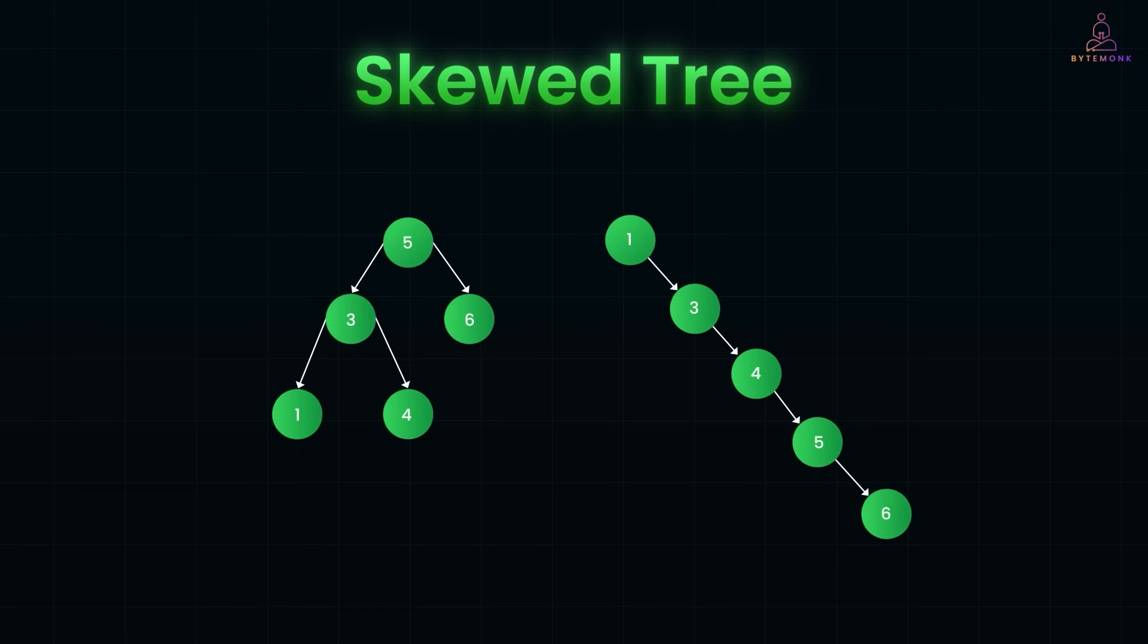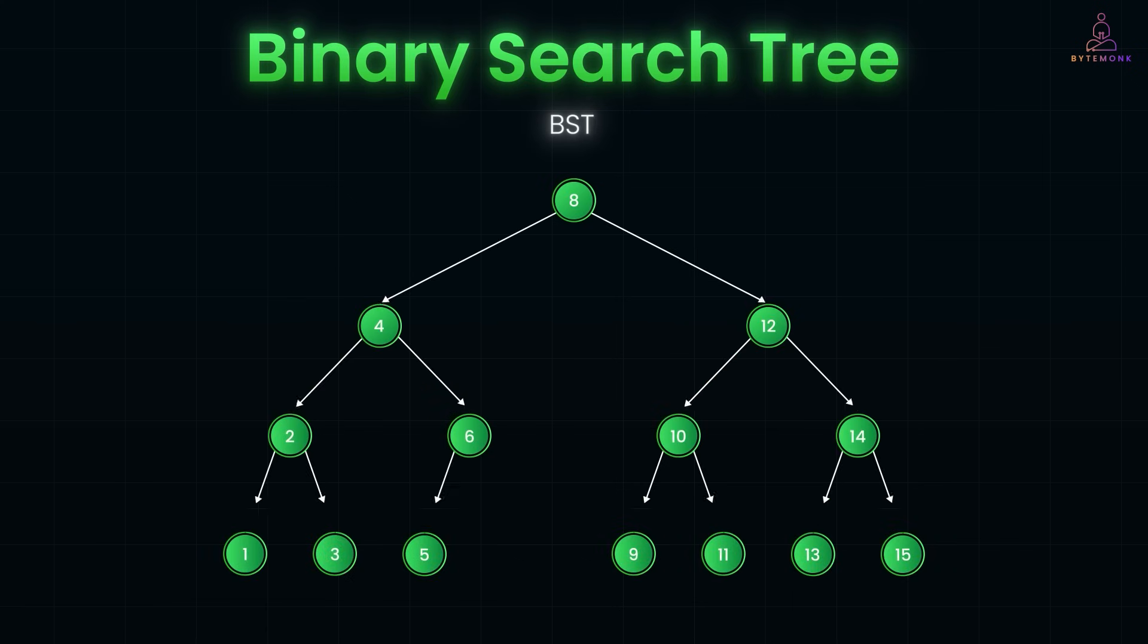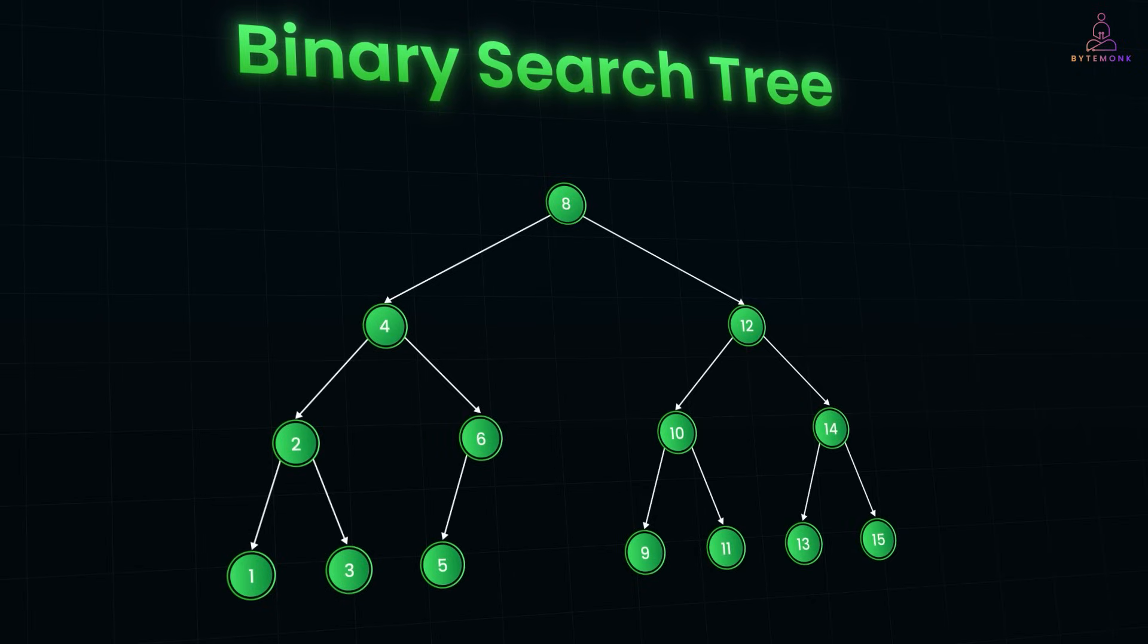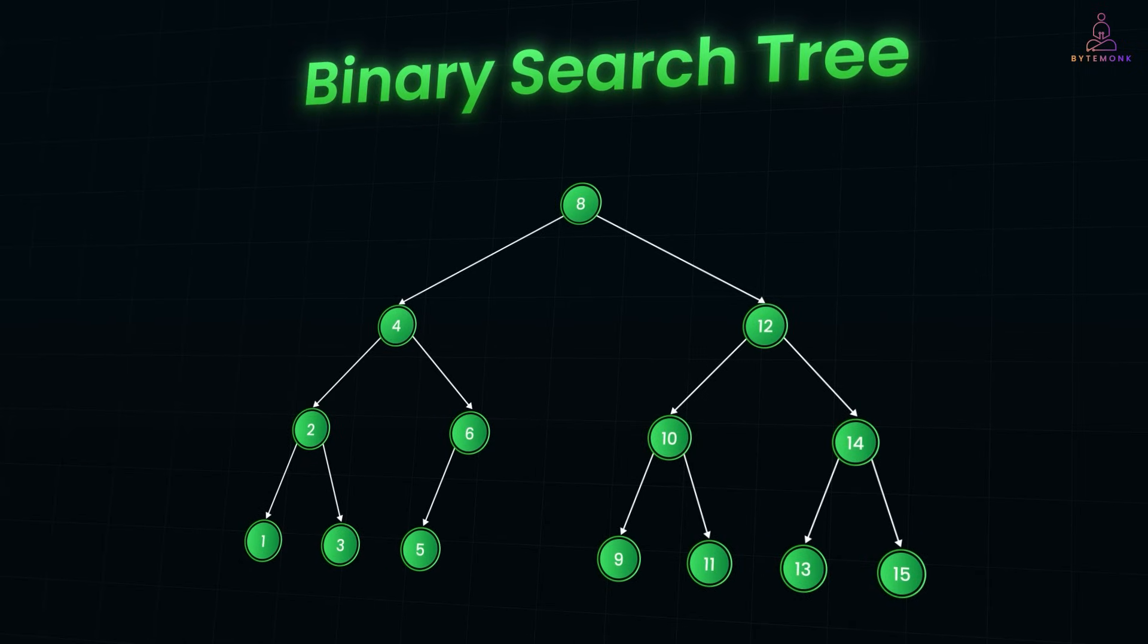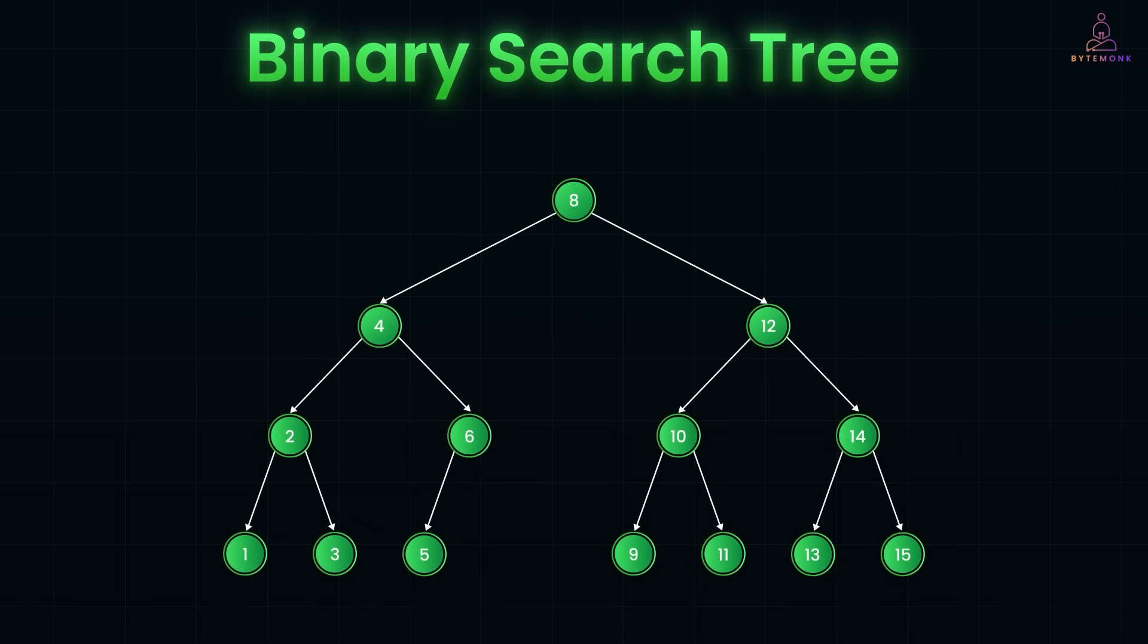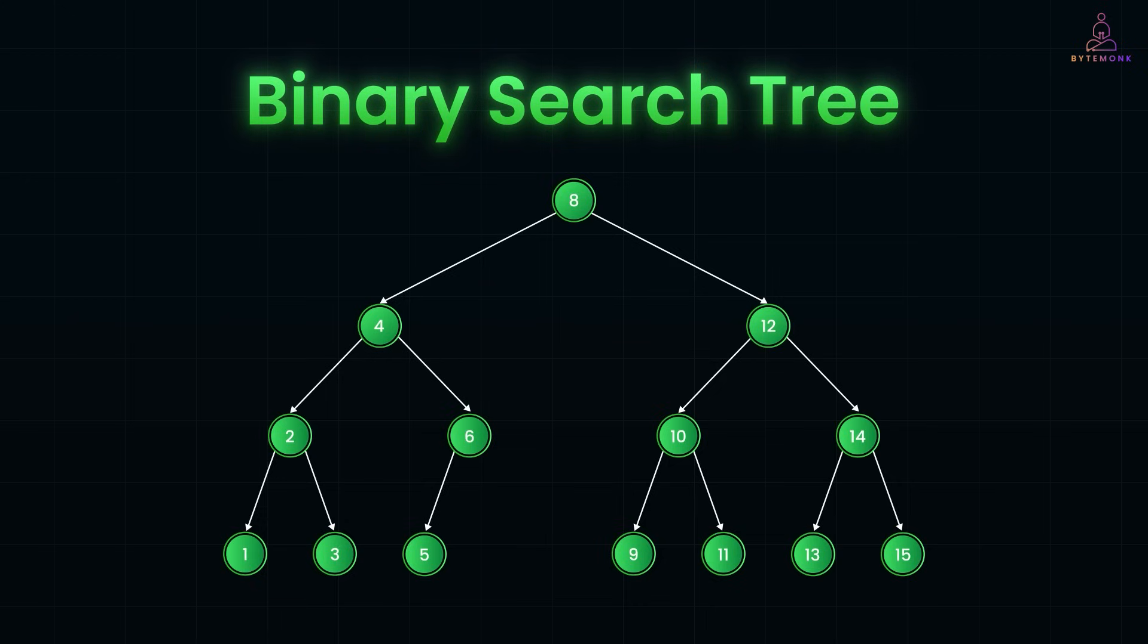Now, let's talk about one of the most useful types of binary trees, the binary search tree or BST. A BST adds one simple rule to the binary tree structure. For any node, all values in its left subtree are less than the node's value, and all values in the right subtree are greater. This ordering lets us perform search, insert, and delete operations much faster. Because we can eliminate half the tree at every step, just like binary search.